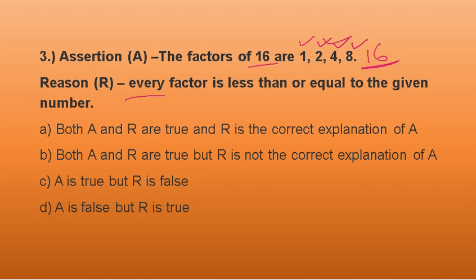16 is not mentioned here. So I go with option number D. A is false, but R is true. R is true. Reason is given true. But assertion is wrong. The factors of 16 are 1, 2, 4, 8 and 16. Next question on your screen.